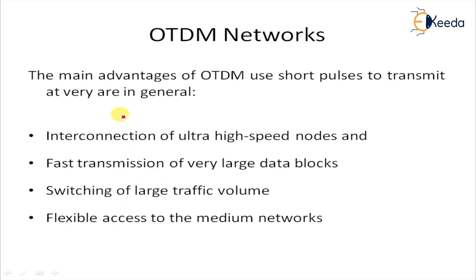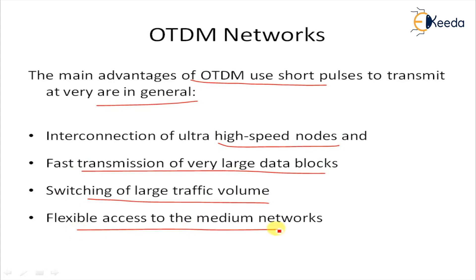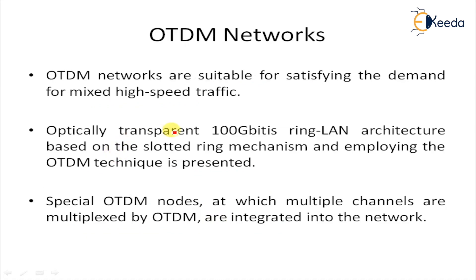There are many advantages of OTDM — it uses short pulses to transmit data. The advantages include: interconnection of ultra high speed nodes, fast transmission of very large data blocks, switching of large traffic volumes, and flexible access to the medium network. Therefore, OTDM networks are suitable for satisfying the demand of mixed high speed traffic.